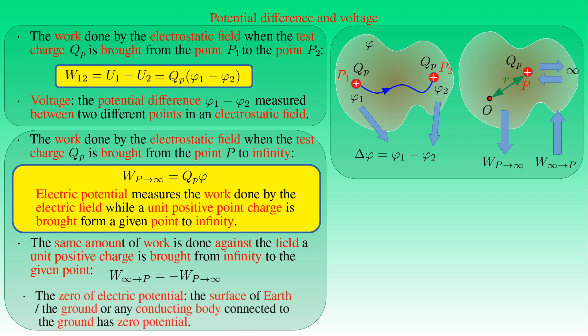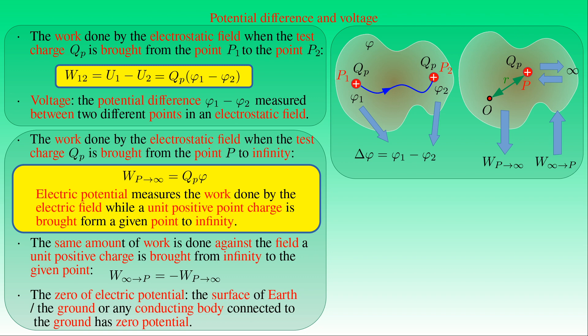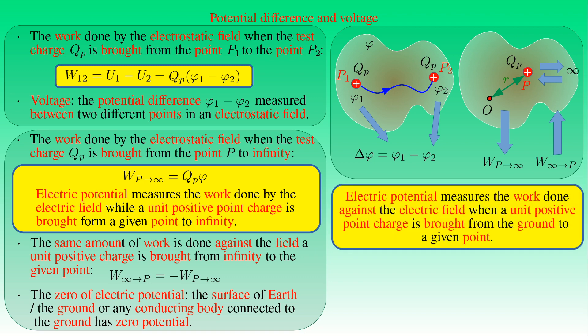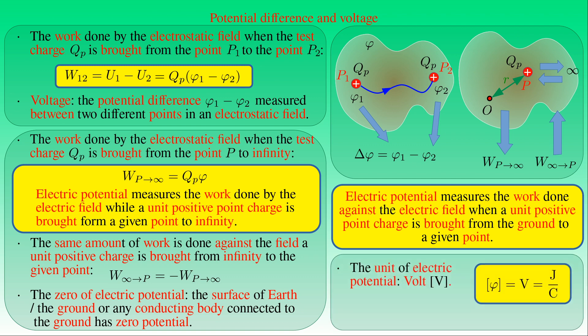We can have an arbitrary choice for the zero of electric potential, but in practice the surface of Earth (the ground) or any conducting body connected to ground is considered to have zero potential. The potential is unity at a point if one unit of work is done while a unit positive charge is brought from ground to that point. If the work equals one joule when a charge of one coulomb is brought from ground to point P, then the potential at P is one joule per coulomb, which is the definition of one volt (V).